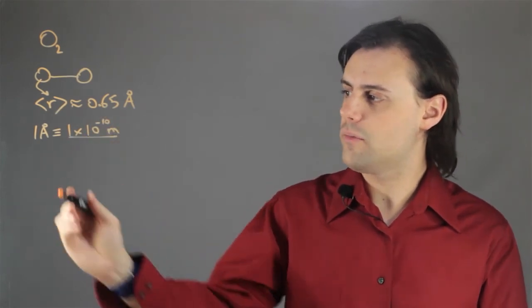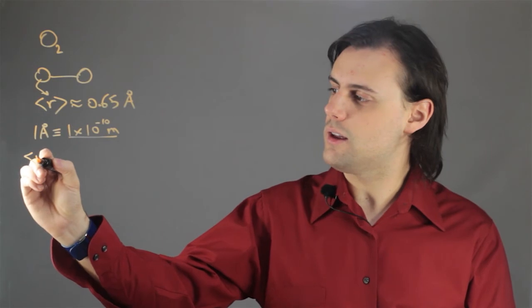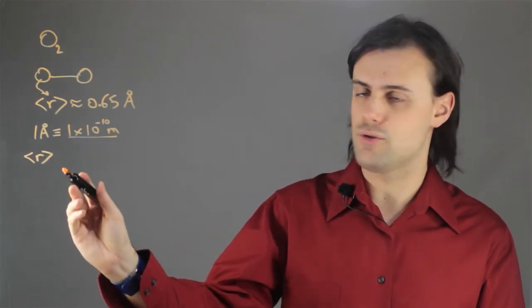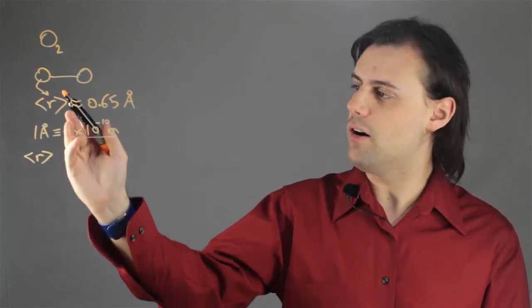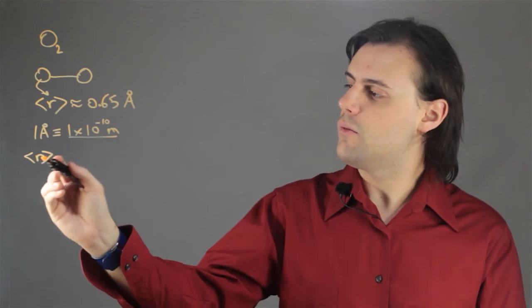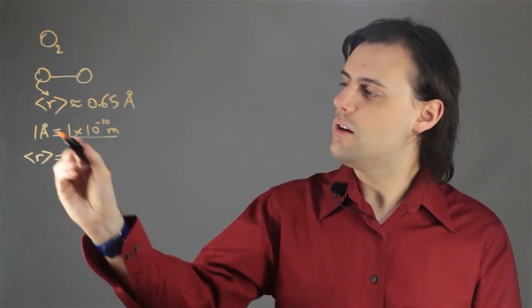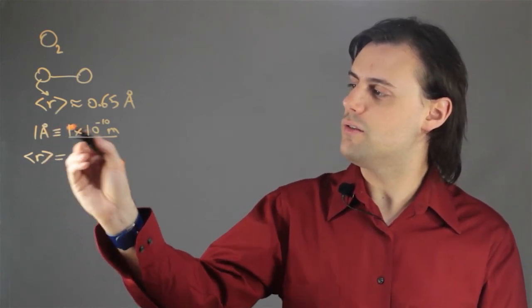Therefore, if we want to calculate the average radius of atomic oxygen here, we have, simply using this definition of angstroms,